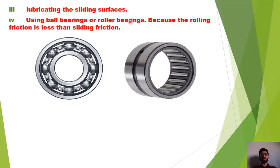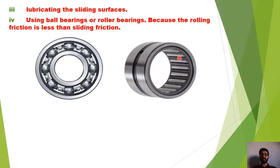چوتھا method ہے using ball bearings اور roller bearings because the rolling friction is less than sliding friction. Ball bearings یا roller bearings کو use کر کے ہم friction کی value کو کافی حد تک کم کر سکتے ہیں۔ یہاں پہ آپ دیکھ رہے ہیں کہ steel کے balls موجود ہیں تو یہ ball bearing ہے اور جہاں balls کی جگہ پہ rollers use کی ہیں وہ roller bearing ہے۔ ان کو machinery کے different parts میں use کر کے friction کو کافی حد تک کم کر سکتے ہیں۔